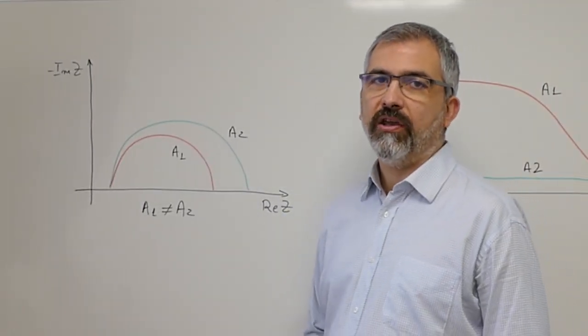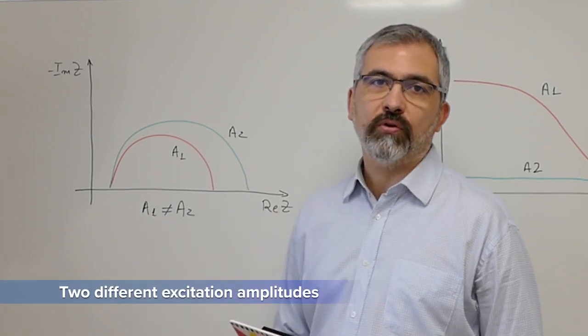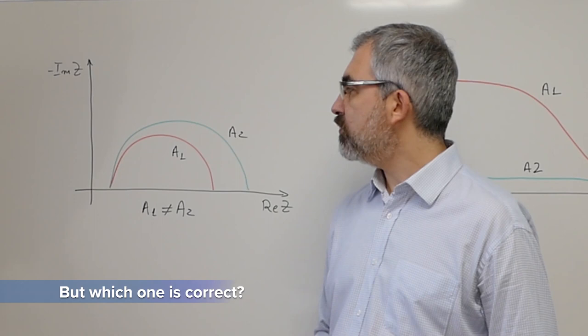What should we do if, like here for the same cell, we get two different Nyquist plots for two different amplitudes? Which one is correct?